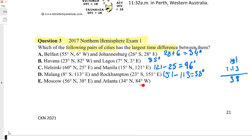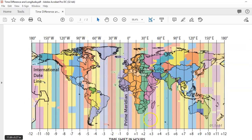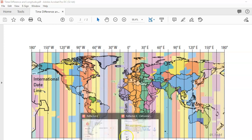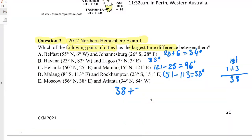Moscow is 38 degrees east and Atlanta is 84 degrees west — they're on opposite sides, so we add them: 38 + 84 = 122 degrees. That's the largest difference of all the pairs, so option E — Moscow and Atlanta — is the correct answer. That's how we find the time difference using longitude.